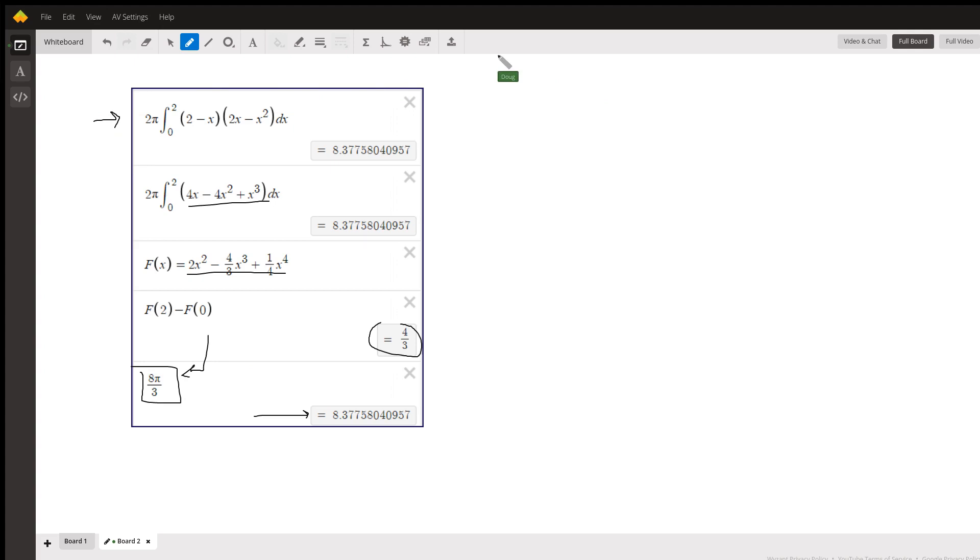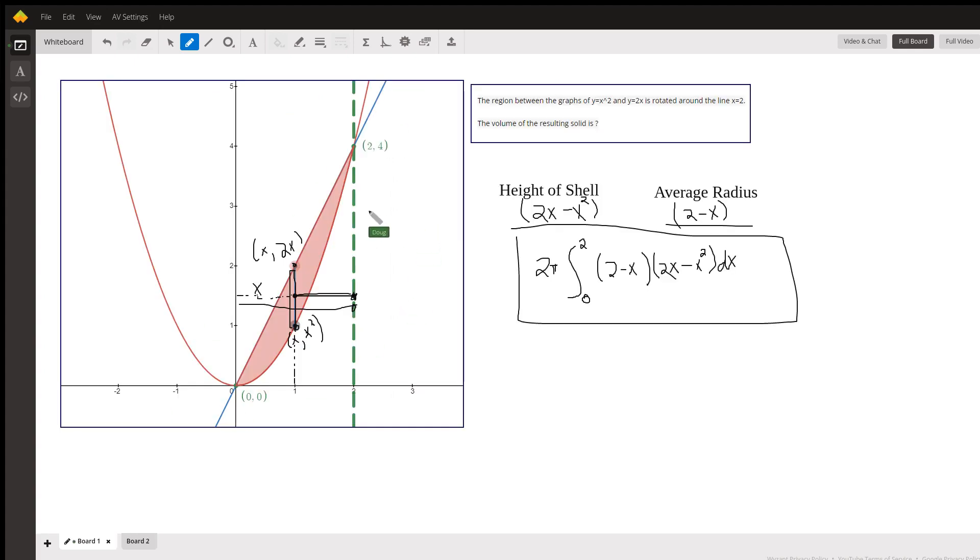There you go. I'll include a link to the Desmos graph where this came from, and you'll see that you can actually move these points around to see different positions for it and for the typical shell and the average radius. There you go.